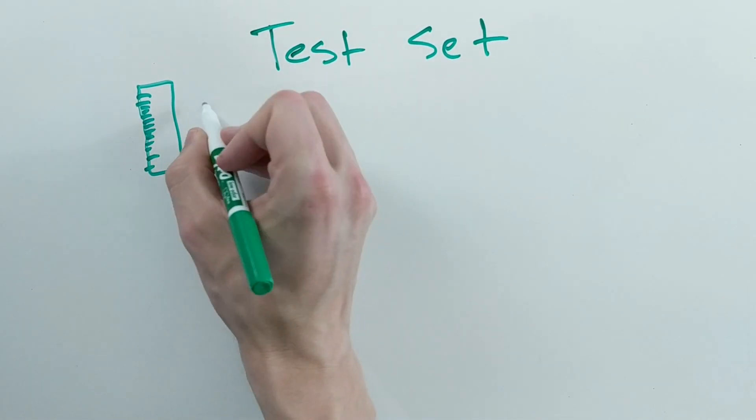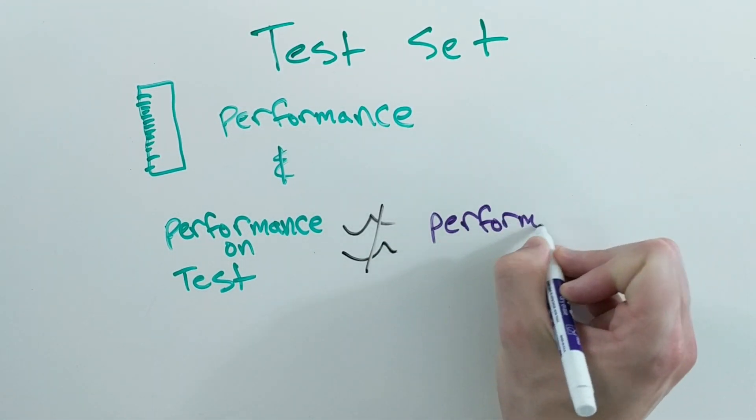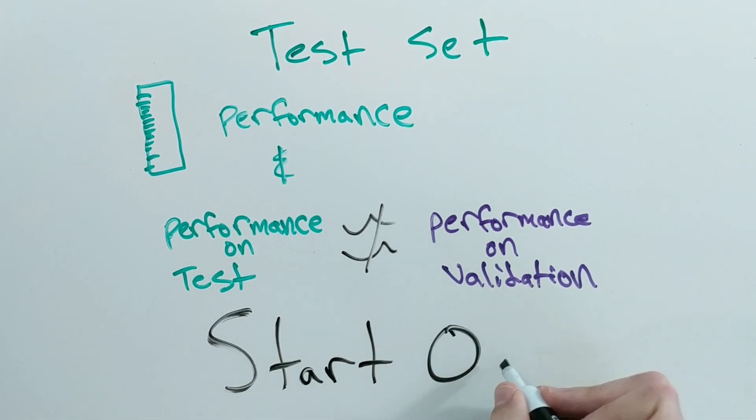The idea of a test set is to measure how good your model is, and if that performance is way different from your performance on the validation set, you should just start over from scratch.